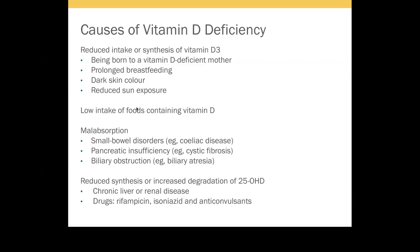How do patients get vitamin D deficiency? Reduced intake or synthesis. When a baby is born to a vitamin D deficient mother, breast milk already has low vitamin D. If the mother is deficient, even less is excreted through breast milk. Prolonged breastfeeding beyond one and a half to two years without additional vitamin D supplements can cause deficiency. Patients with dark skin need longer sunlight exposure — reduced skin exposure or low intake of vitamin D containing foods also results in deficiency.